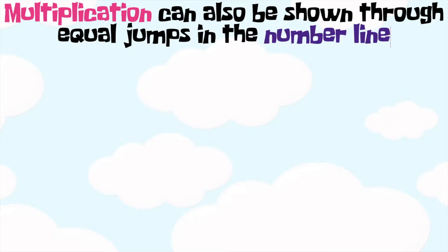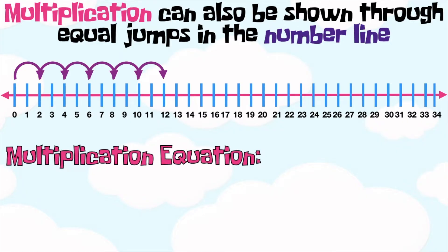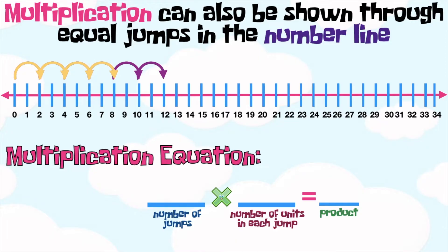Multiplication can also be shown through equal jumps on the number line, just like this example. To write the multiplication equation using the number line, the first factor is the number of jumps, the second factor is the number of units in each jump, and the answer is the product. So, let's find the first factor by counting the number of jumps together: one, two, three, four, five, six. So, we have six jumps.